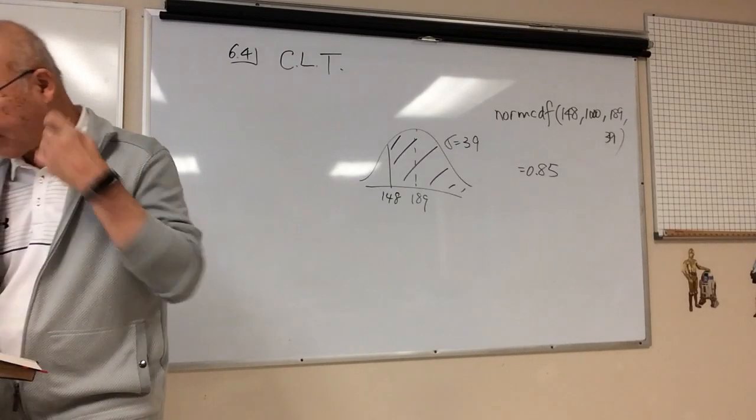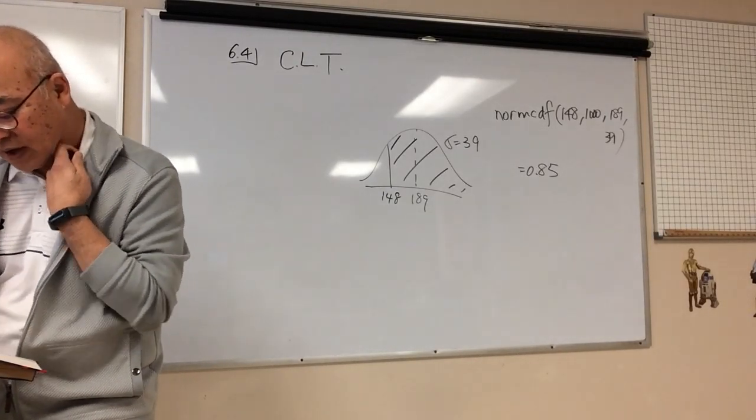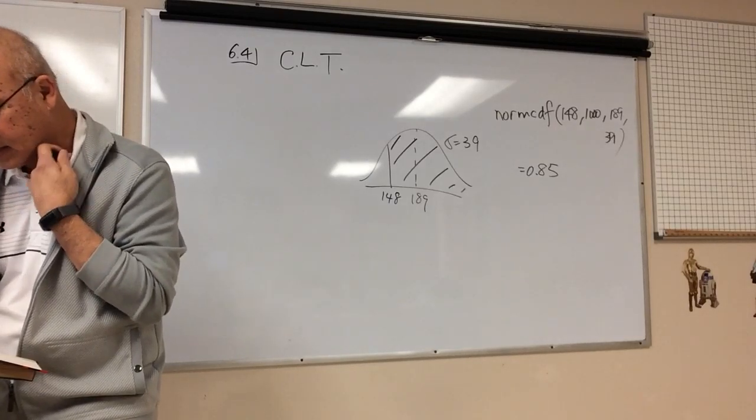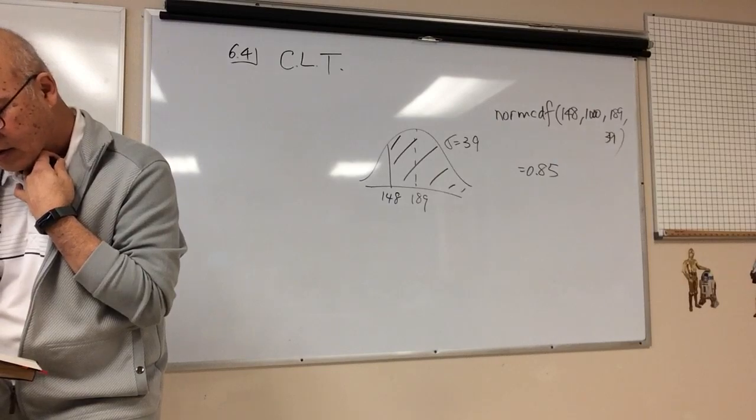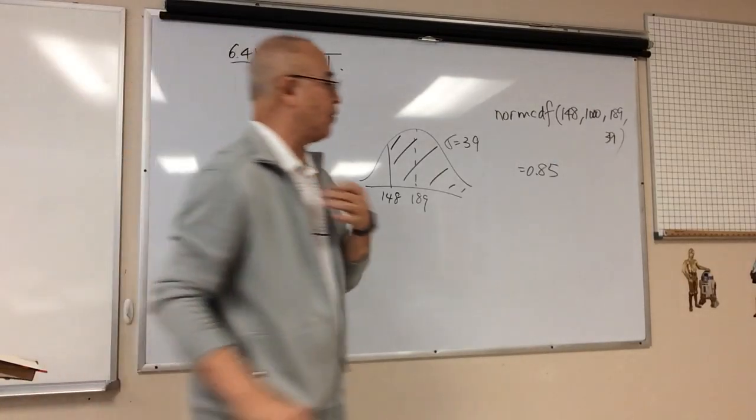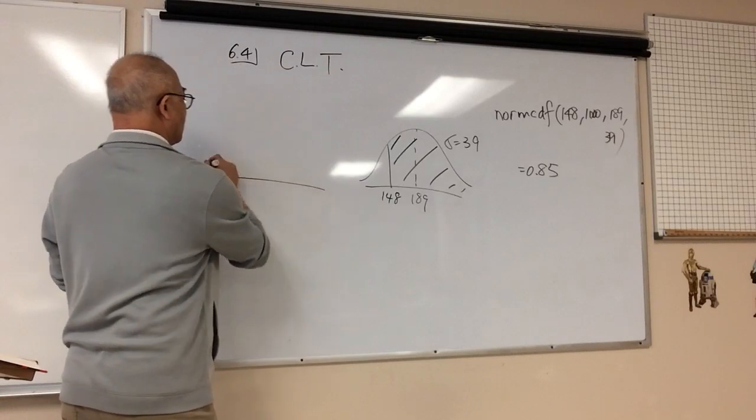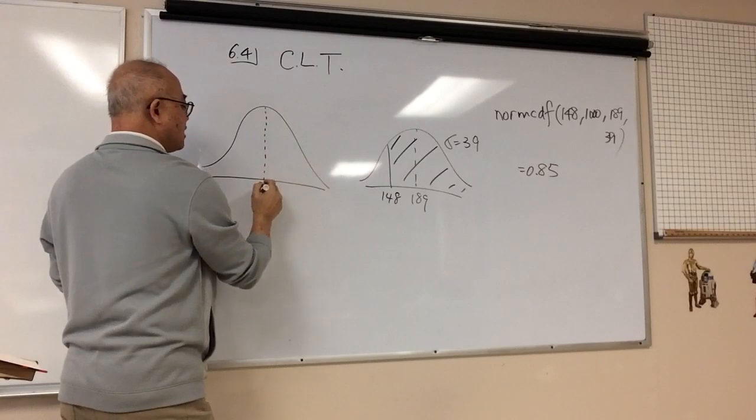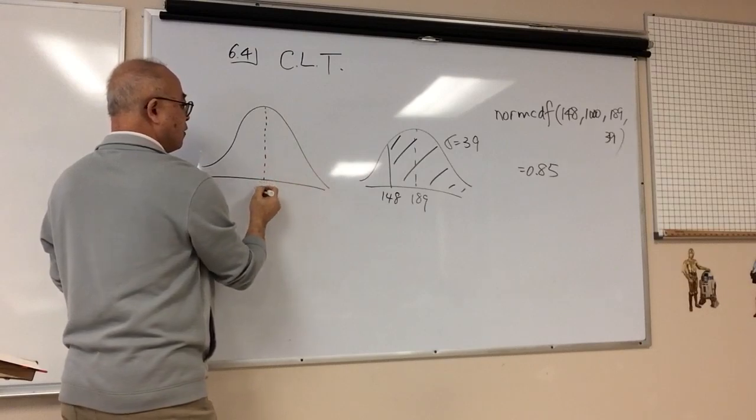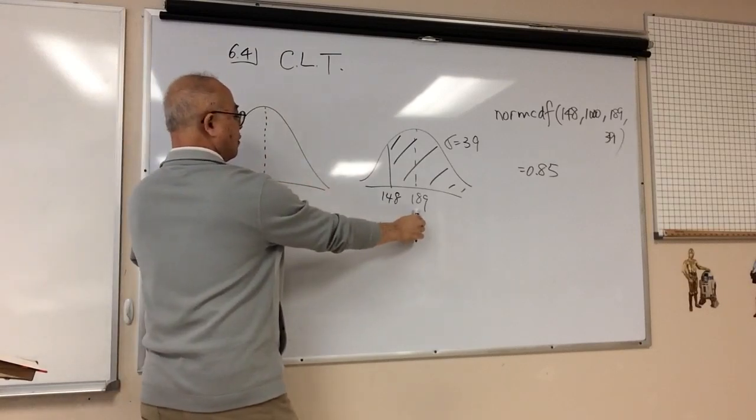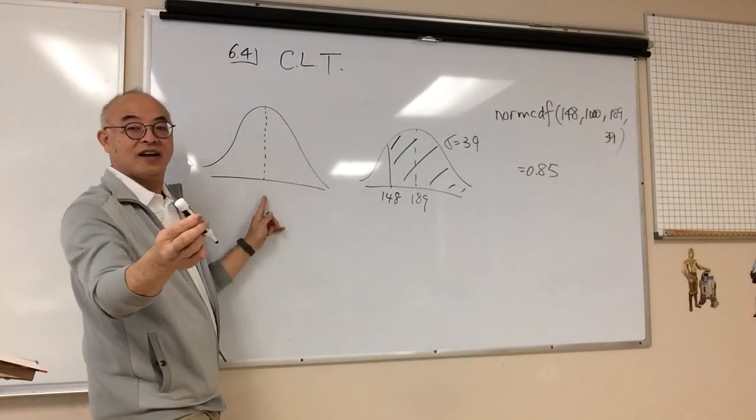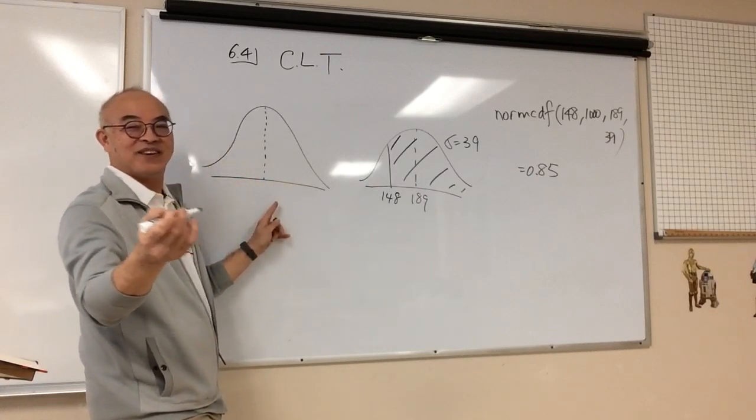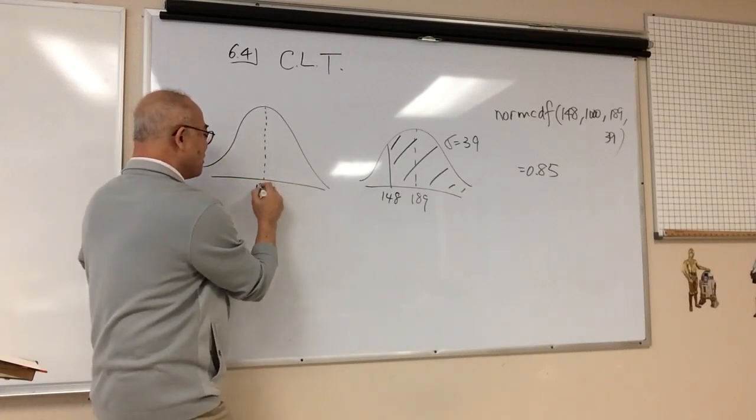So B, find the probability that a sample of 27 randomly selected adult males has a mean weight greater than 148. So in this one, now we're going to do, this is the sample. What's my mean here? 189. It would be the same, right? Why? It's an unbiased estimator, right? It's an unbiased estimator. 189.